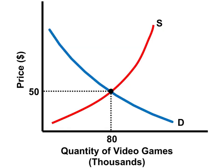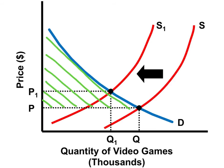In this market for video games, consumers that are willing and able to spend more than $50 per video game will experience consumer surplus — that's the area above $50 and under the demand curve. When the supply of video games shifts to the left, the price increases, and this increase in price and the decrease in quantity demanded will cause the market consumer surplus to shrink to this triangle.